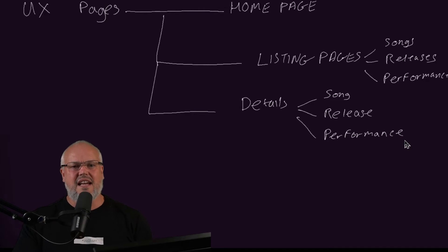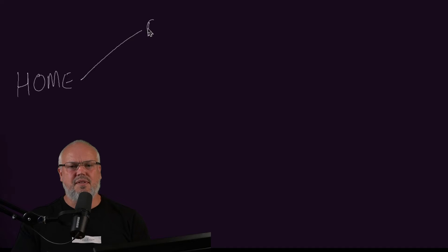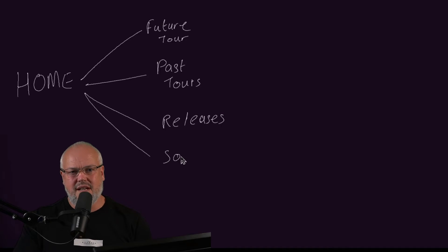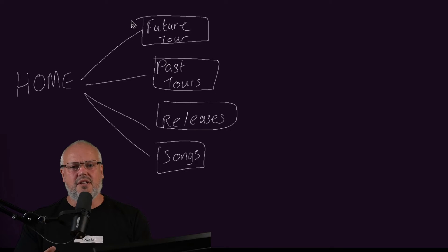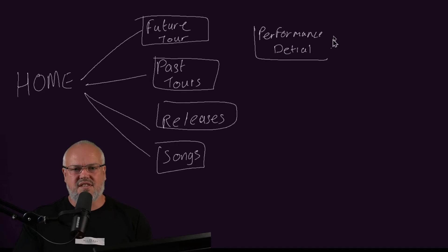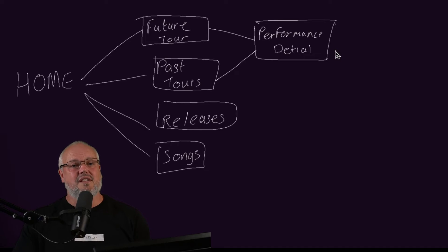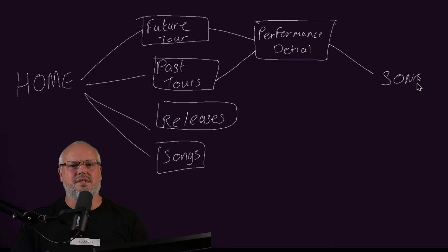Let's see how these pages work together and how customers will flow between them. Assuming a customer lands on a homepage, they would move to a list page using the menu to find what they're looking for — a performance they went to see, a performance they want to go and see, or an album, single, or individual song. Regardless of what they're looking for, past or future performances, they will go to the same performance detail page. For future performances, we could integrate a booking engine to buy tickets. For previous performances, they could see the list of songs performed and all the associated media. From this page they can go to the song's details page to see lyrics, writers, etc.